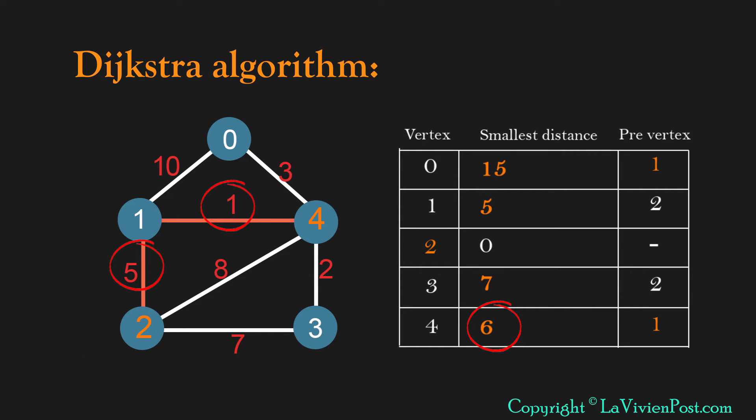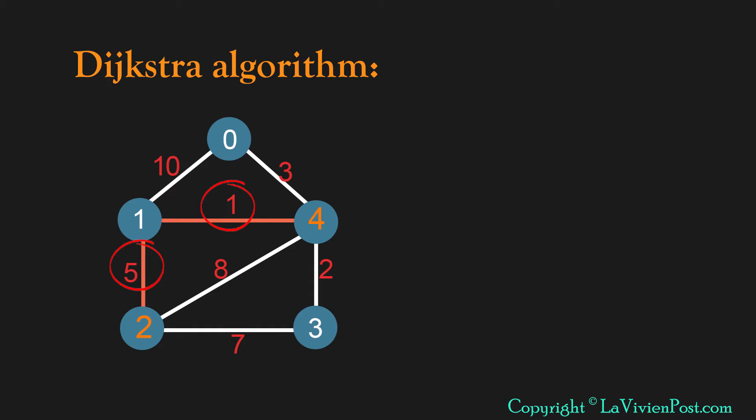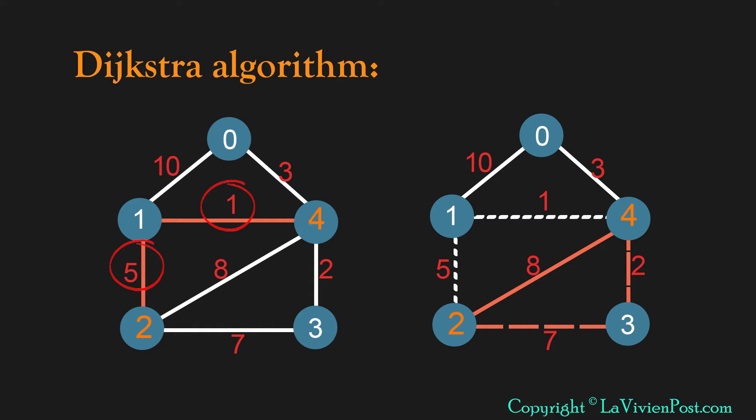To find the second shortest distance, the idea is to remove each edge in the shortest path. Code Dijkstra again, the smallest value will be the second shortest distance. It is 8 in our case.